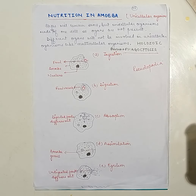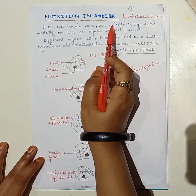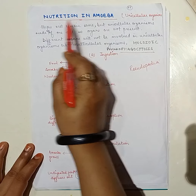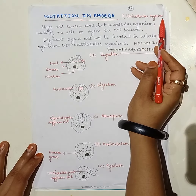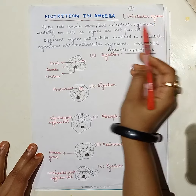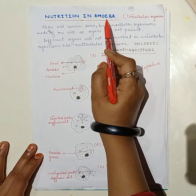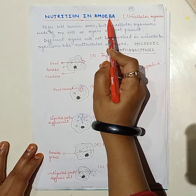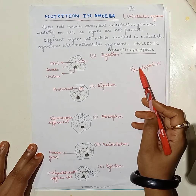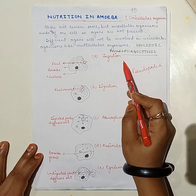Hello everyone, welcome to the class. Bio with Alifa. Today's topic is nutrition in the case of the unicellular organism. An example of a unicellular organism is amoeba, as I discussed earlier in my previous class.